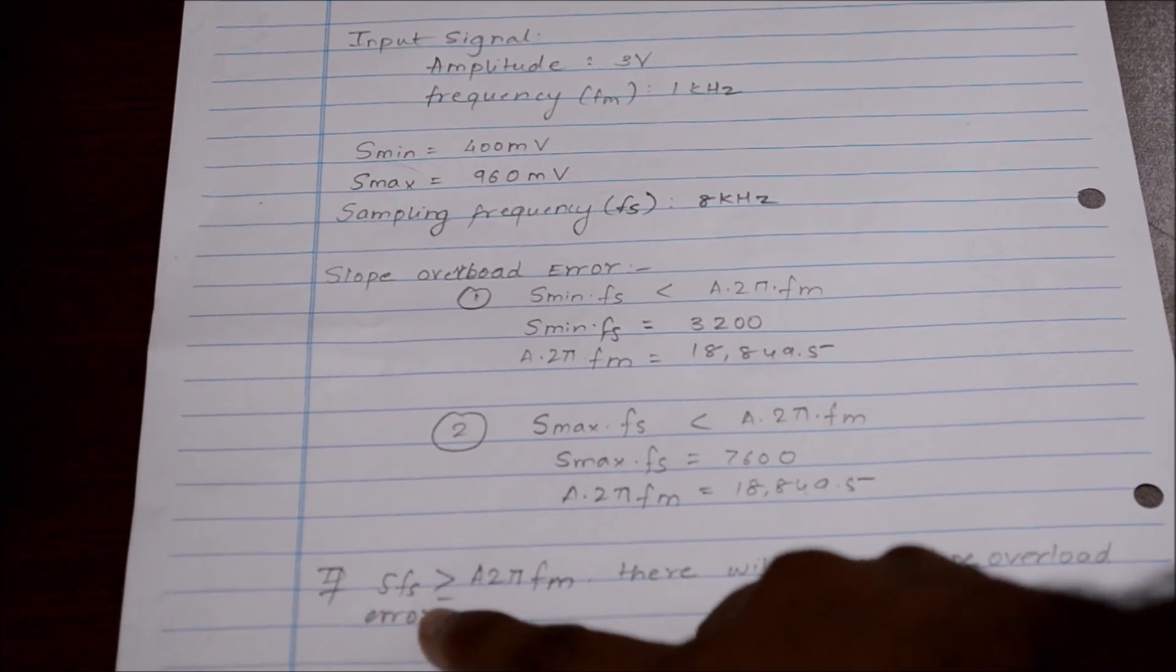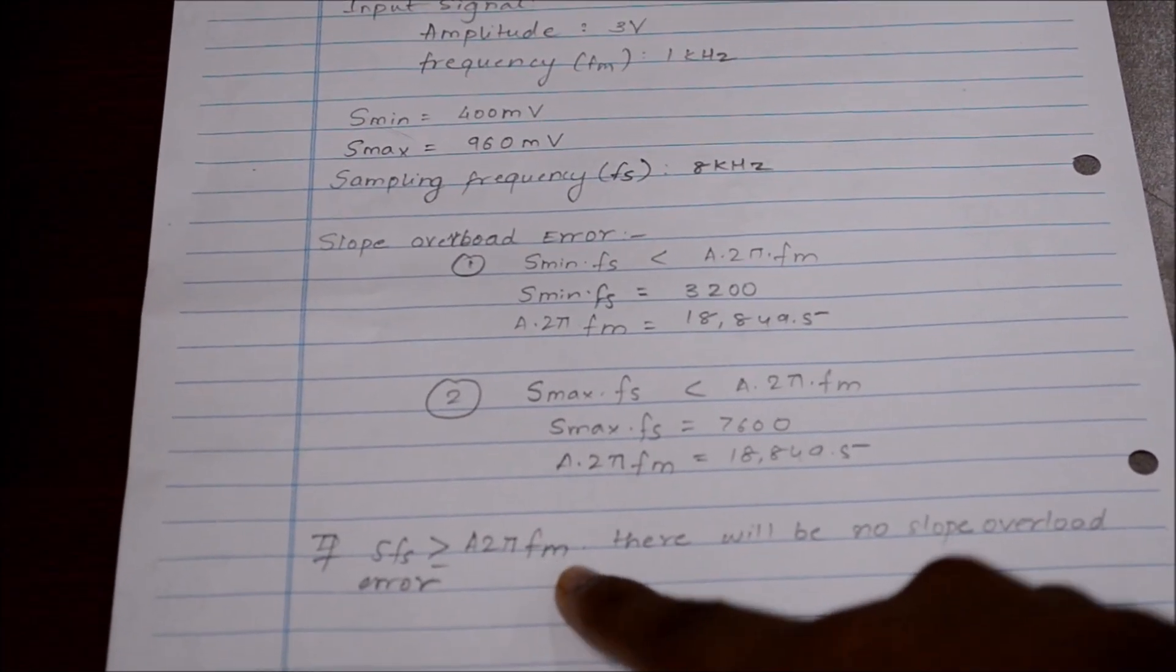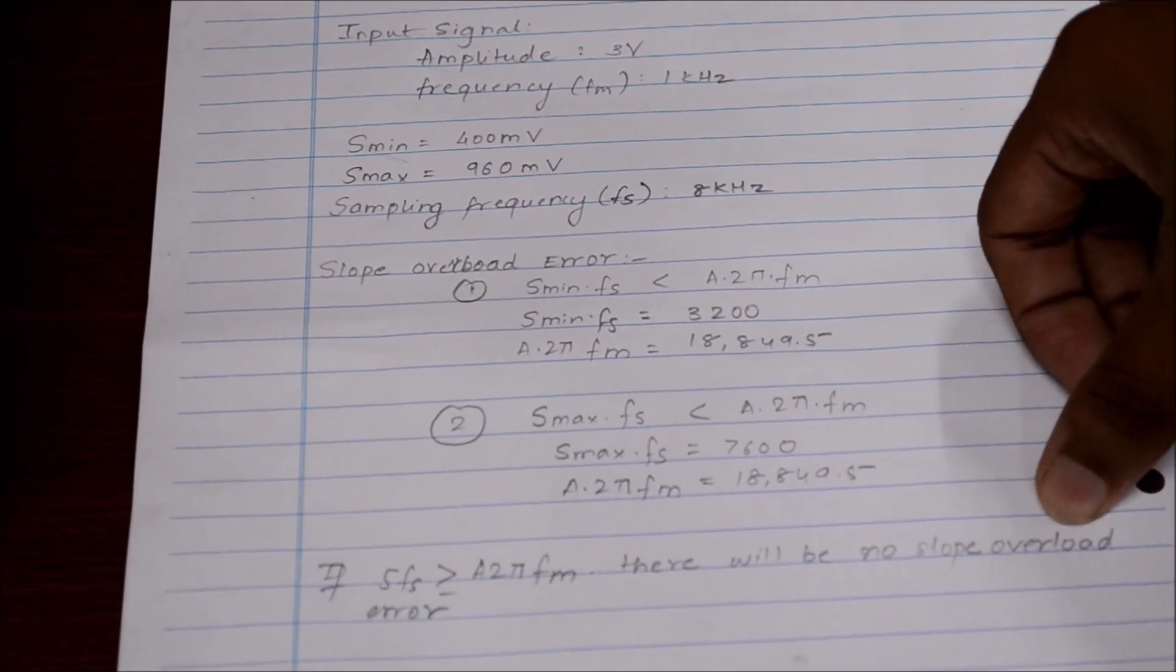If this value, step size into fs, is greater than or equal to a into 2π into fm, there will be no slope overload error.